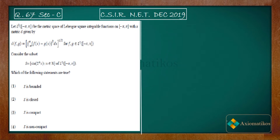Hello dear students, welcome to Exeomatic course. This video is part of the solution series for CSIR NET December 2019, and we are doing problem 67 of your paper — it's an MSQ problem. Let L²(−π, π) be the metric space of Lebesgue square integrable functions on this set, with a metric D defined on the L² space on (−π, π). The question gives us a set of functions.